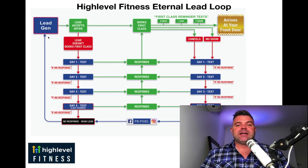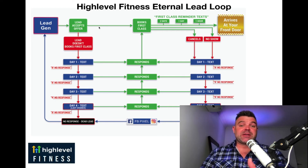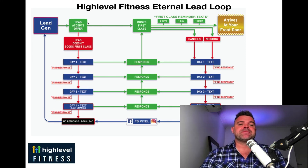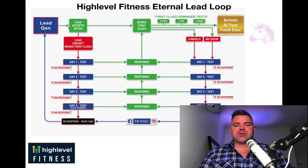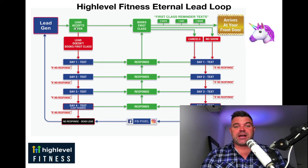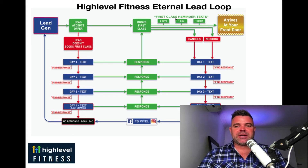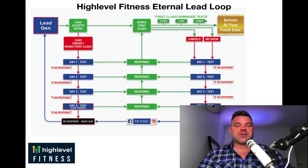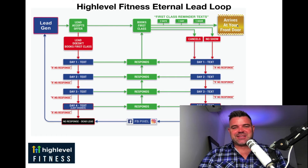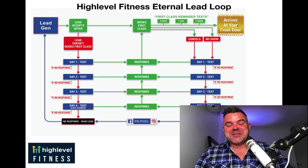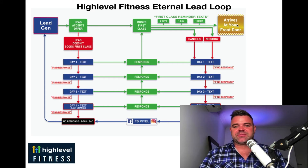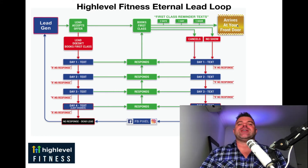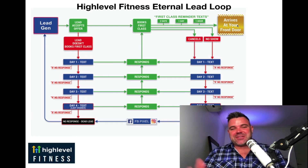Let's think about the typical prospect journey. So we've got lead generation — the lead accepts the offer, whether on Facebook or via database reactivation. Let's talk about a unicorn prospect — they accept the offer, they text back straight away, book their first class starting in two days. They get a two-day-to-go reminder text, a one-day-to-go reminder text, and a one-hour-to-go reminder text, reminding them to come in. They show up at your front door, and you use your sales methodology to convert them. But of course, that only happens maybe 5–10% of the time.